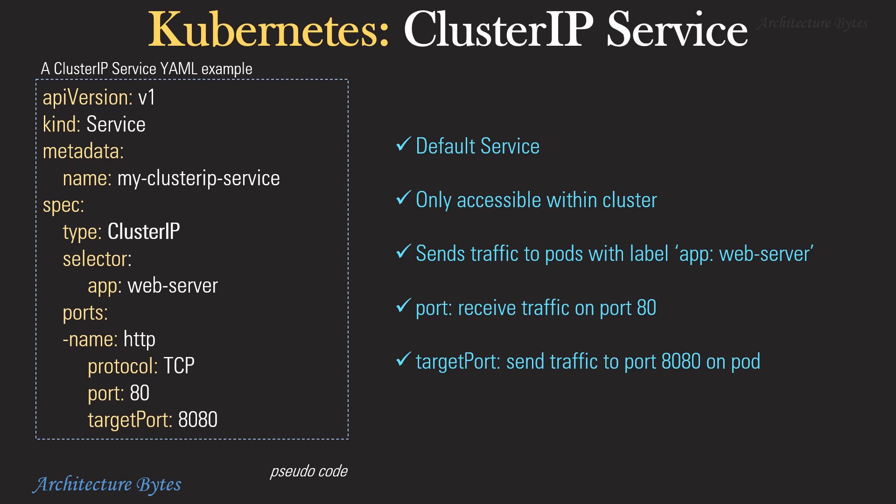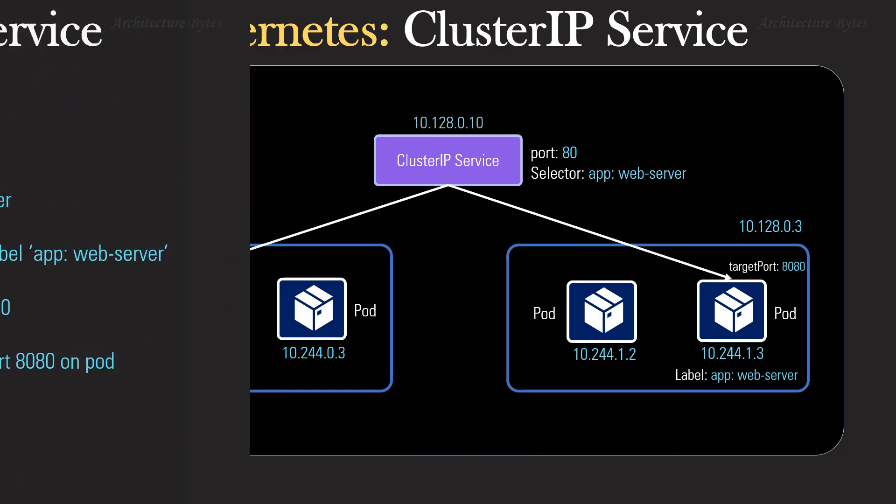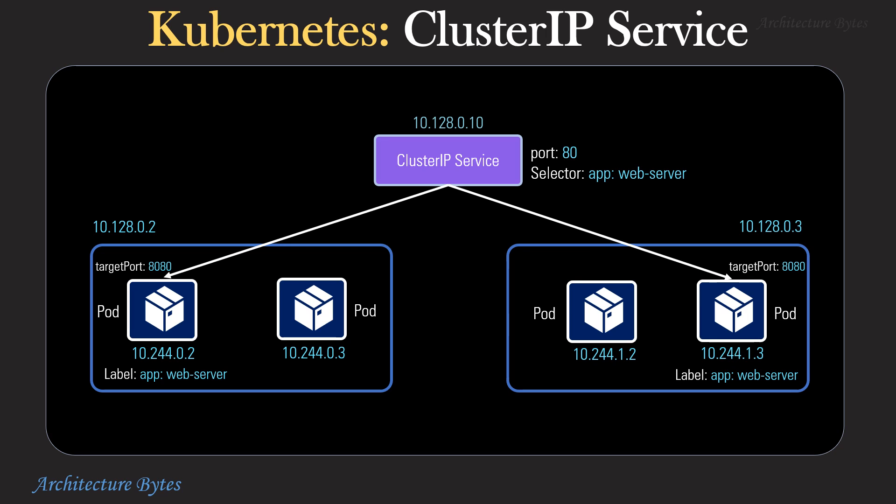Here is an example of a ClusterIP service. This is the default service type and it is only accessible within the cluster. It sends traffic to pods which match the selector label app colon web server. It receives traffic on port 80 and sends traffic to port 8080 on pods. Here is a diagrammatic representation of the ClusterIP service — the pods for the service are identified based on selector labels.